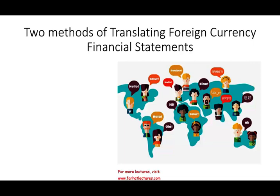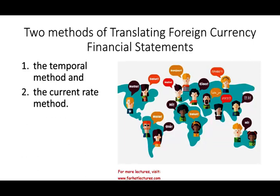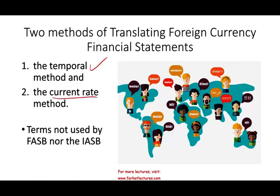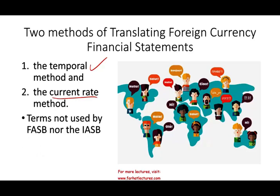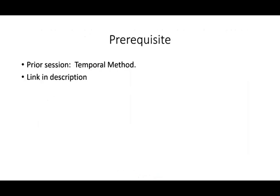Today we're going to talk about the second method. In the prior session we looked at the first method. The two methods are the temporal method and the current rate method. We already covered the temporal method in the prior session; in this session we will cover the current rate method. Note that these terms are not used by FASB or the IASB — they are just used in practice.